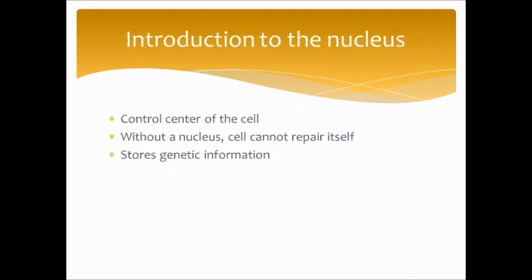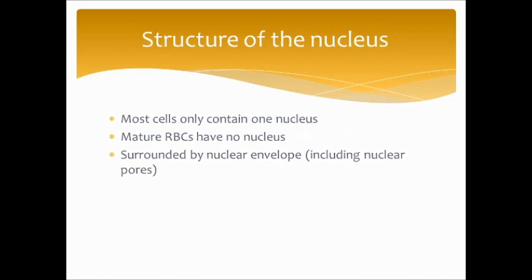The nucleus is known as the control center of the cell. Without the nucleus, the cell cannot repair itself — it needs the genes and genetic code to tell itself how to repair. The nucleus stores genetic information. Most cells only contain one nucleus; mature red blood cells have no nucleus. The nucleus is surrounded by a nuclear envelope with nuclear pores, which are too small to allow DNA through, but RNA can travel through them — and that's how proteins end up being made.